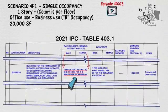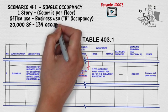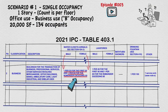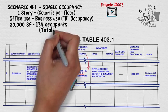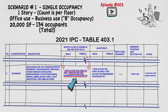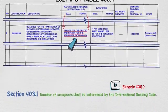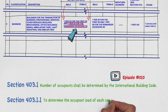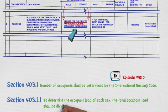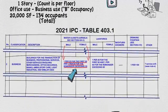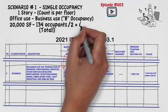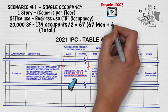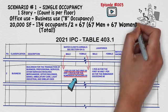For now, let's assume that we have 134 occupants. These 134 occupants are total — meaning total men and women combined. International Plumbing Code section 403.1.1 states that to determine the occupant load of each sex, the total occupant load shall be divided in half. Therefore, we divide 134 by 2, which equals 67 — 67 men and 67 women.